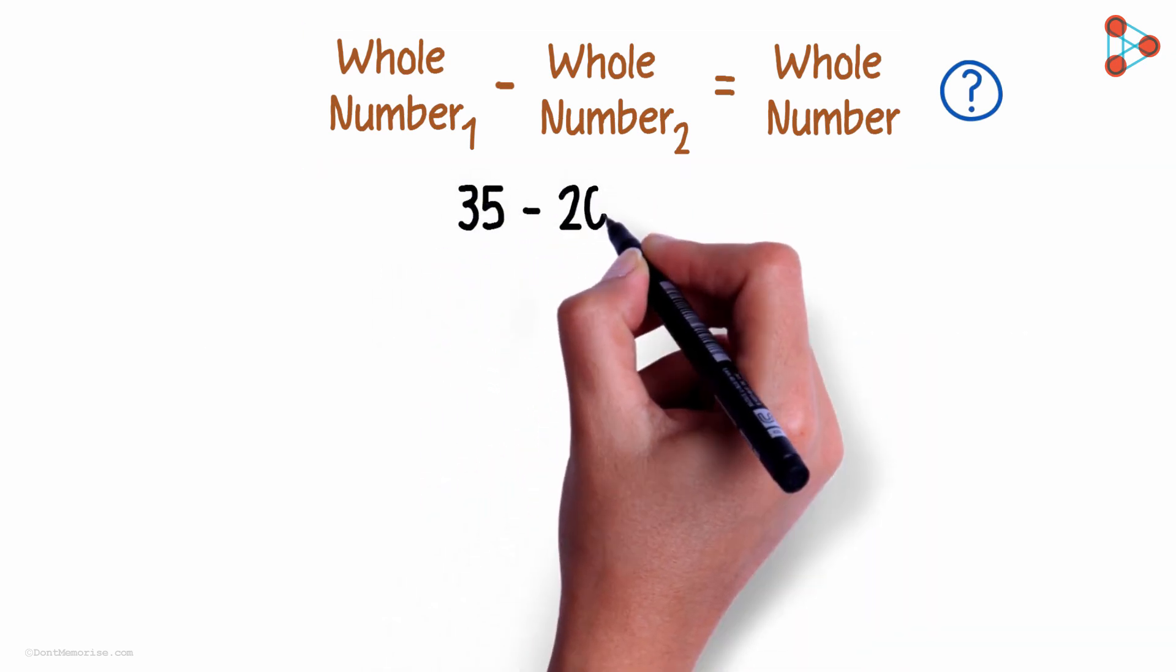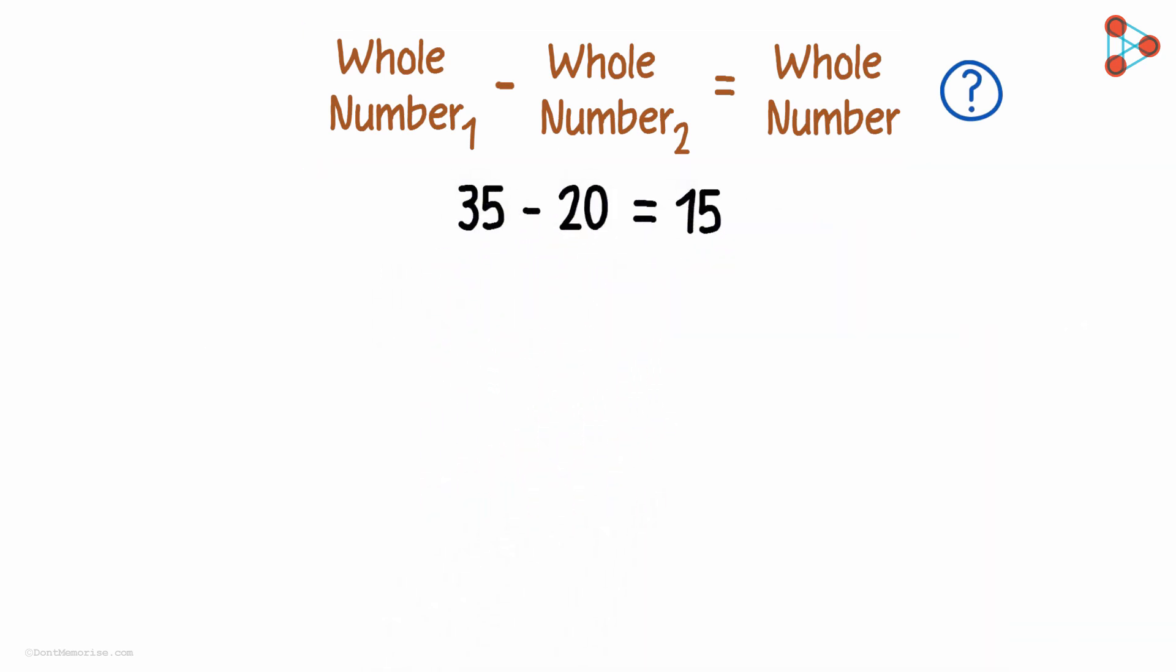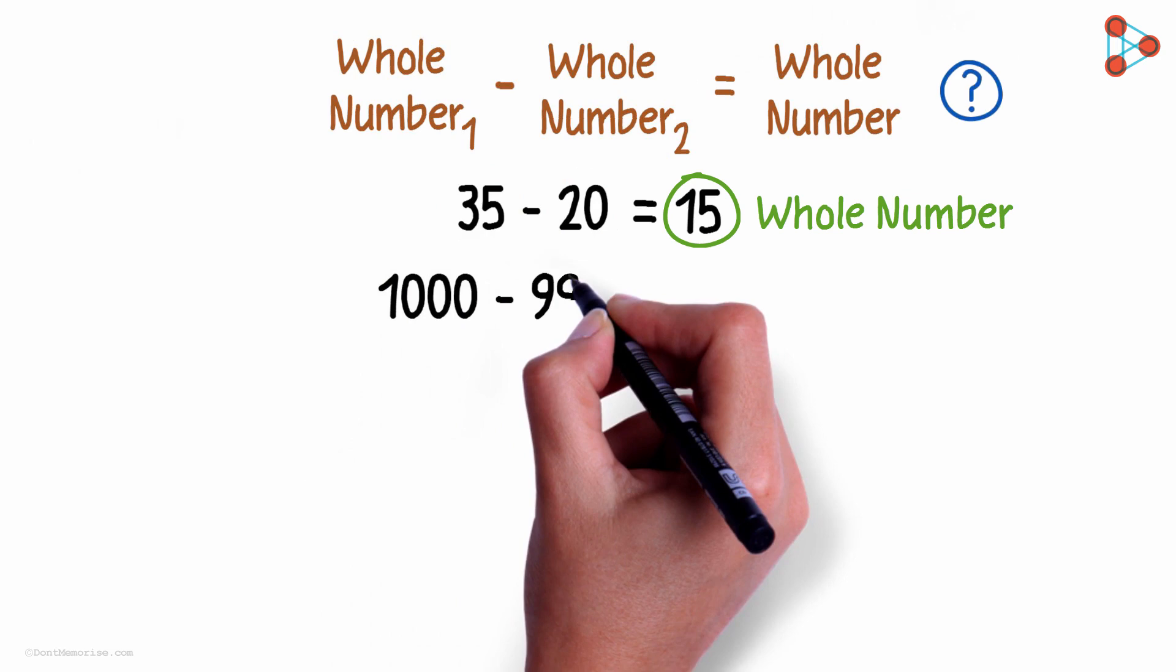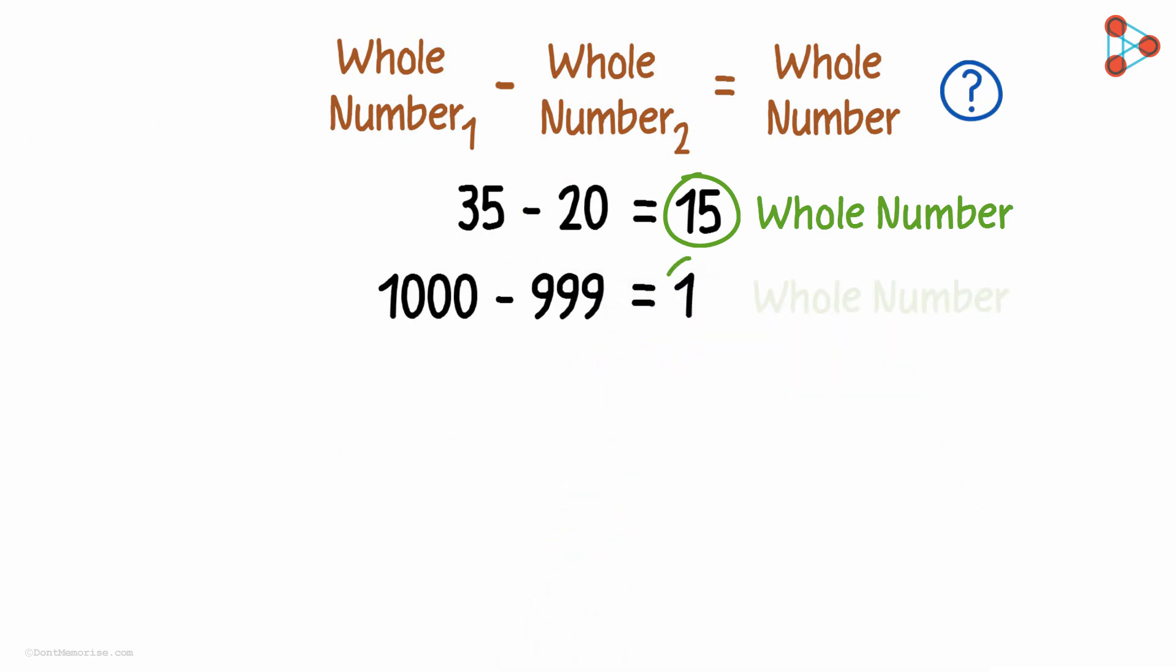35 minus 20 is equal to 15. We subtracted two whole numbers and we got whole number again. Similarly, 1000 minus 999 will give us 1, a whole number again.